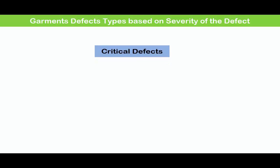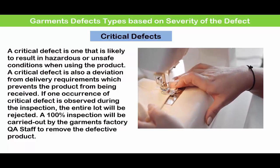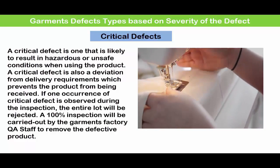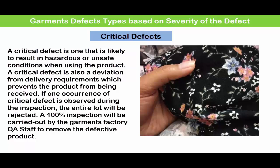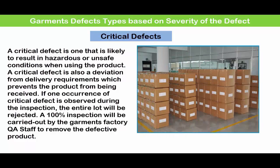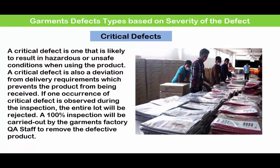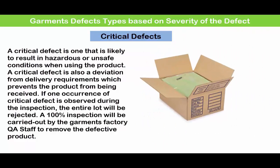Critical defect. A critical defect is one that is likely to result in an unsafe condition when using the final product. A critical defect is also a deviation from delivery requirements which prevents the product from being received. If one occurrence of a critical defect is observed during the inspection, the entire lot will be rejected and a 100% inspection will be carried out by the garment factory's quality staff to remove all defective products.